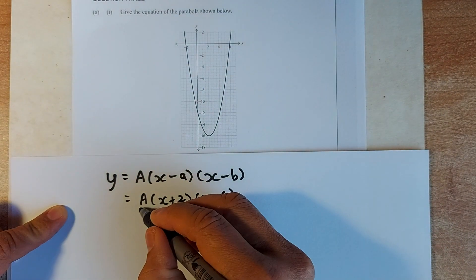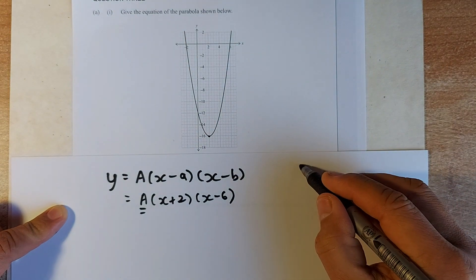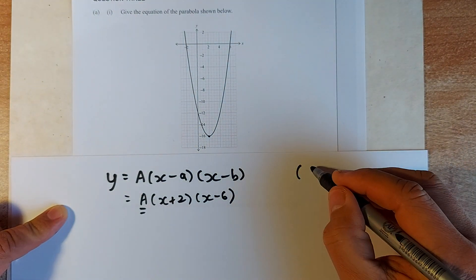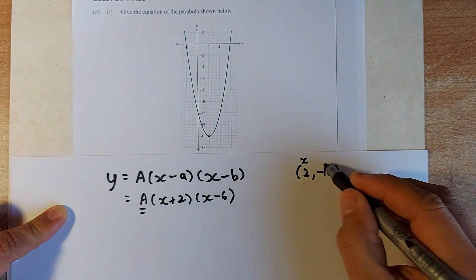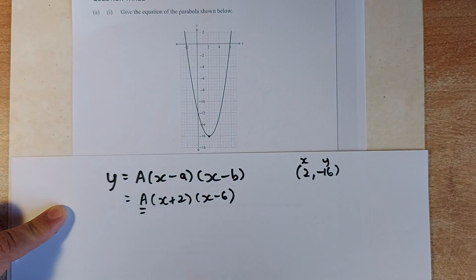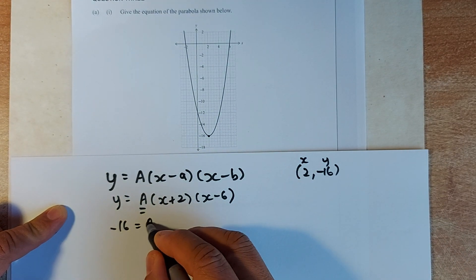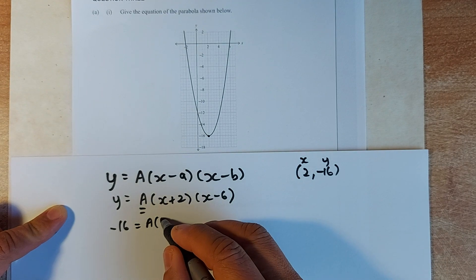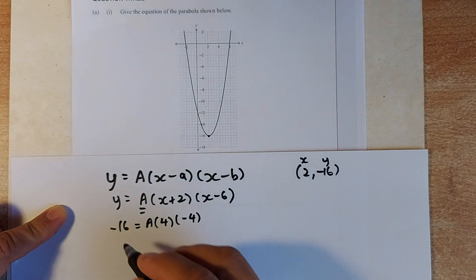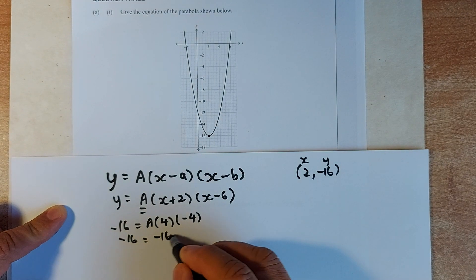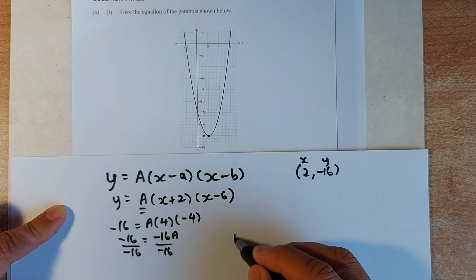The next job is to find the value of a. To find a, you need to find a point on the graph. That point is actually, if you look properly, (2, negative 16). To find your a, you're going to substitute x as 2 and y as negative 16 into that equation. So, instead of y, you replace with minus 16 equals to a. x is 2, so (2 plus 2) is going to be 4, and (2 minus 6) is minus 4. Minus 16 equals to minus 16a. Divide minus 16 on both sides — your a equals to 1.